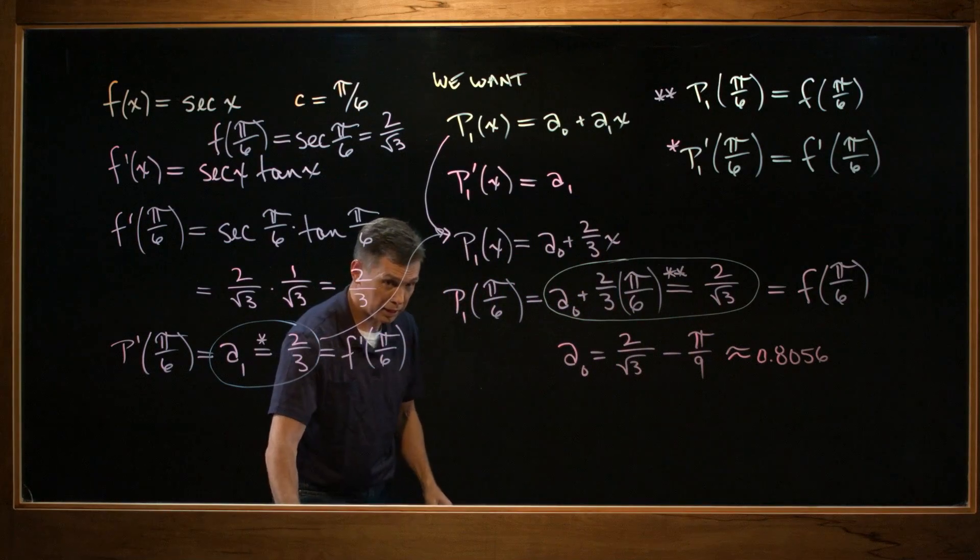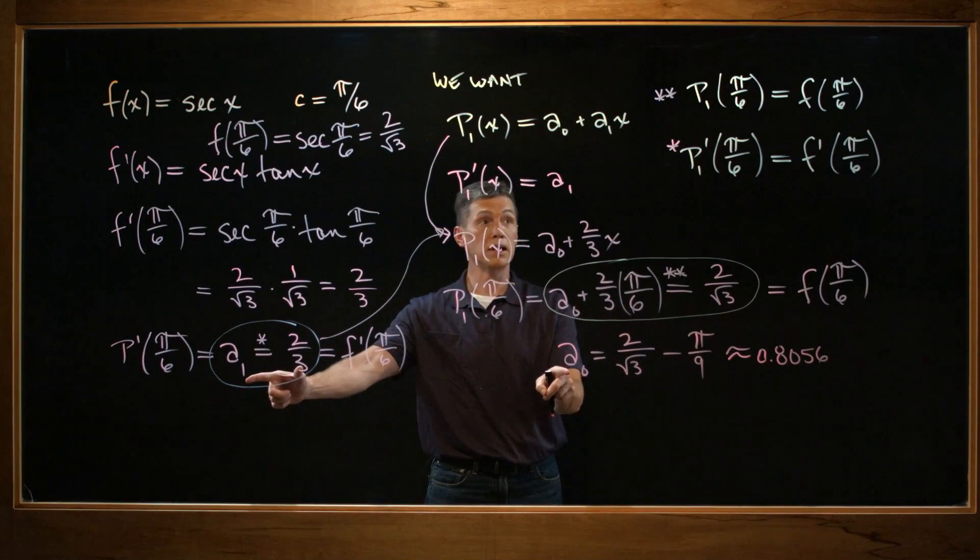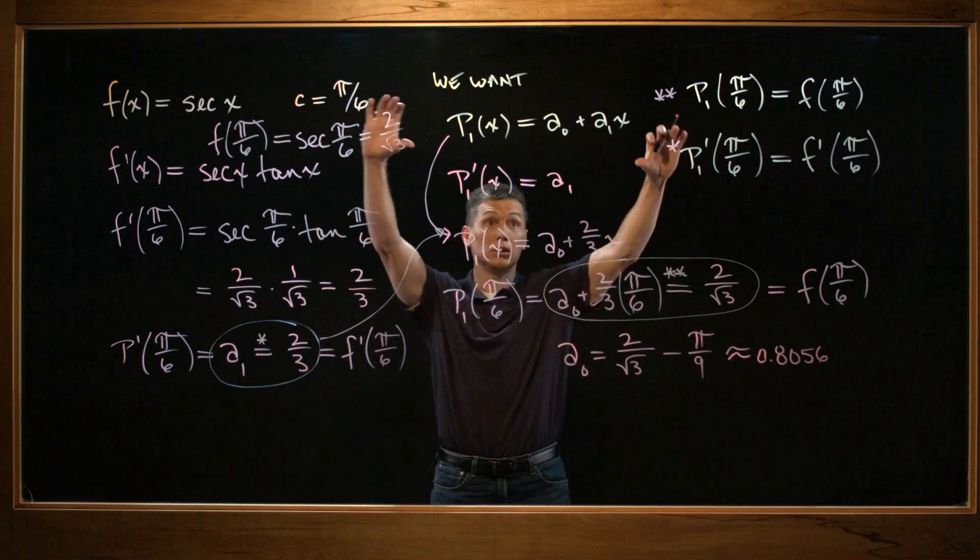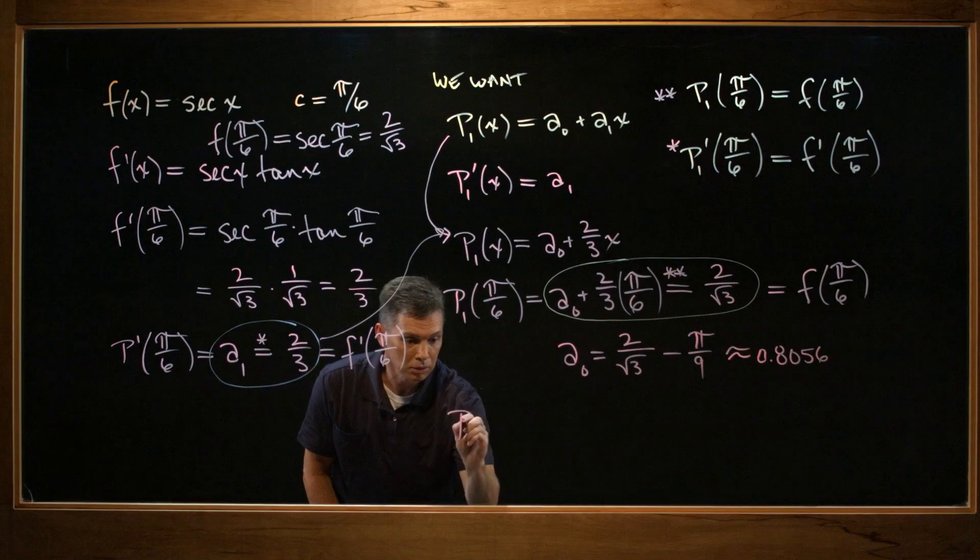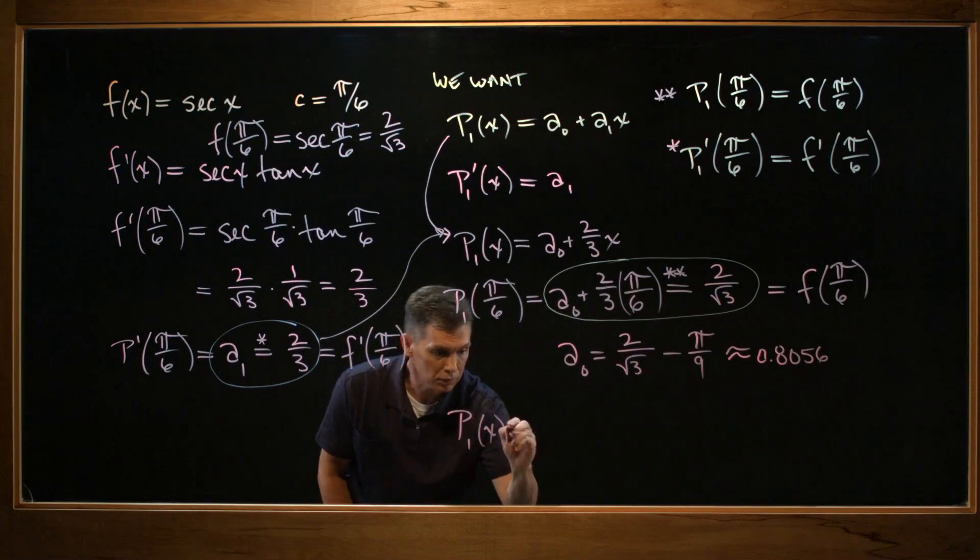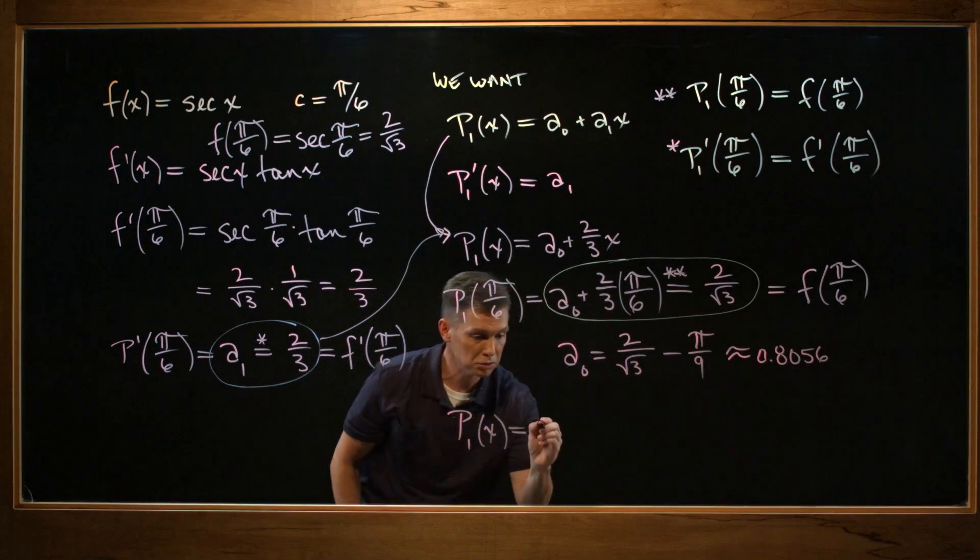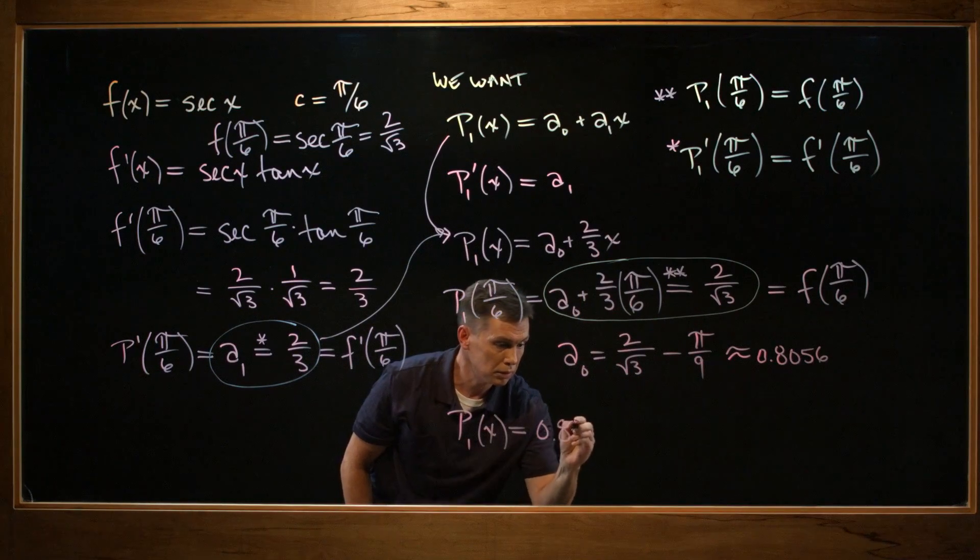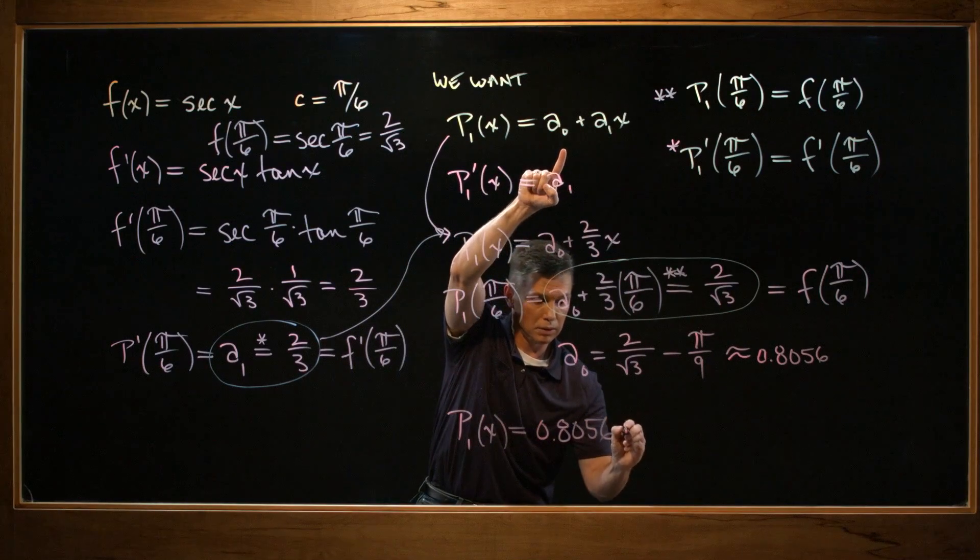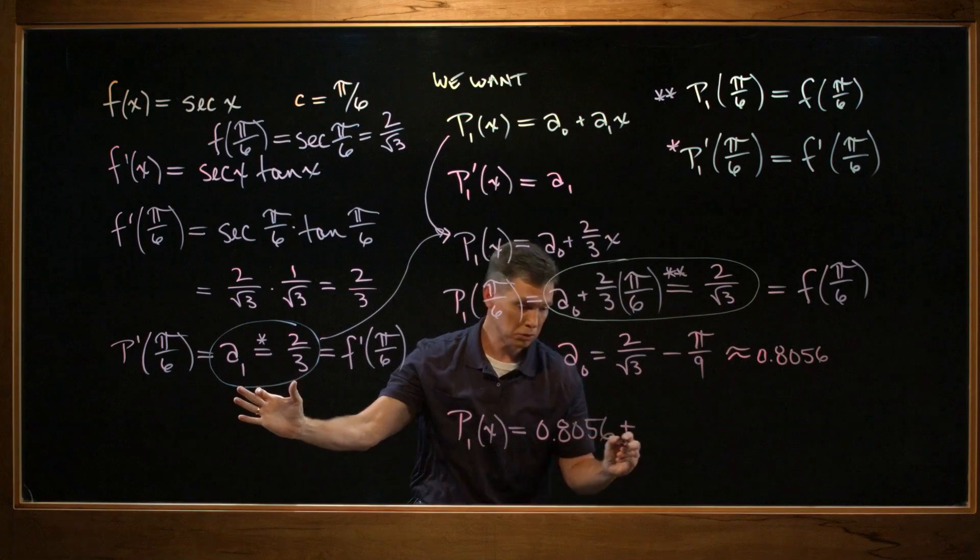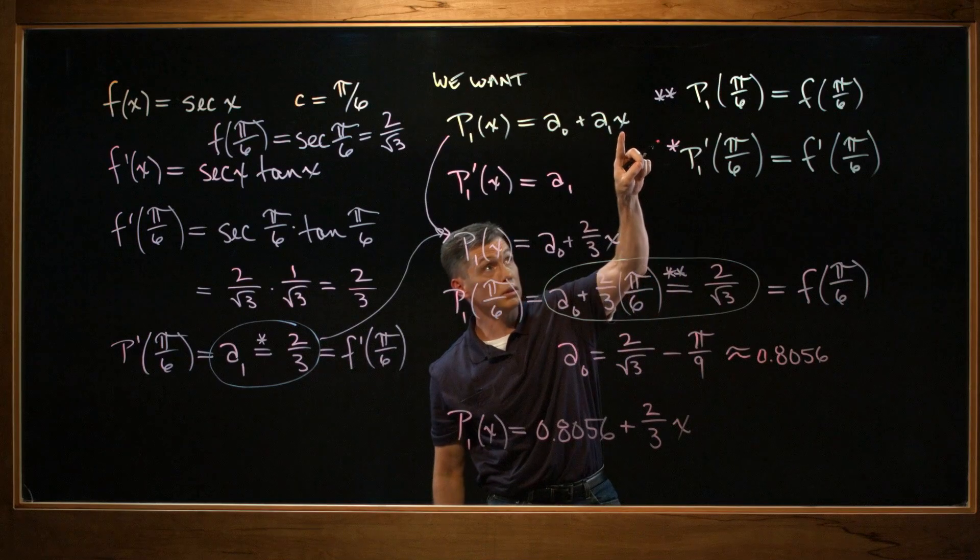All right. As a decimal or a fraction, here's where we're at. Because we have an a₀ value, we had an a₁ value, so we now have a good, a best answer for P₁. So let me write that down here. Here, P₁(x) equals a₀, which is that value we just found, 0.8056, plus a₁, what we found over here as 2/3, times x, coming from there.